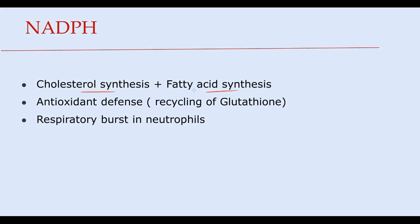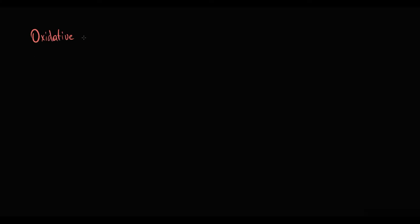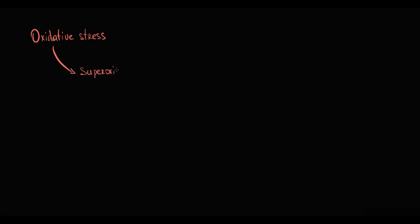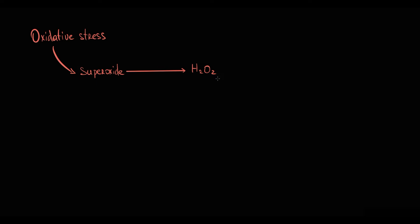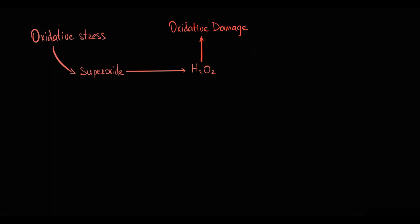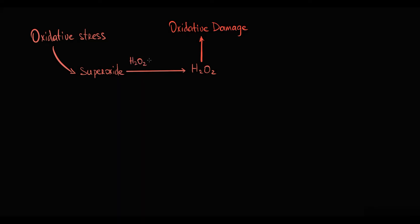NADPH is also required for antioxidant defense, because NADPH is required for the recycling of glutathione. Oxidative stress is characterized by excessive production of reactive oxygen species. Initially superoxide is produced, and then part of the superoxide molecules are converted into hydrogen peroxide. Hydrogen peroxide is a reactive oxygen species — a highly dangerous substance with the potential to cause oxidative damage. To prevent this damage, hydrogen peroxide levels must be strictly controlled. The level of hydrogen peroxide inside the cell is determined by two factors: the rate of hydrogen peroxide formation and the rate of hydrogen peroxide detoxification.